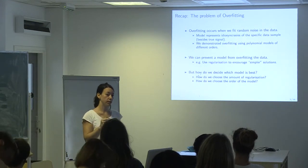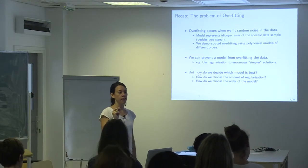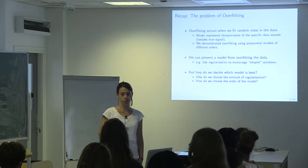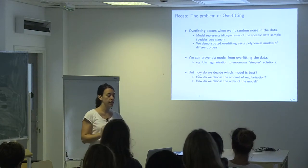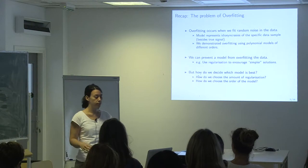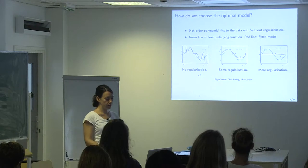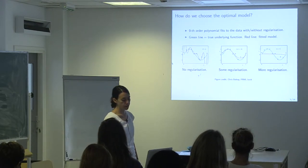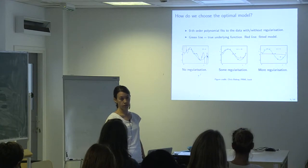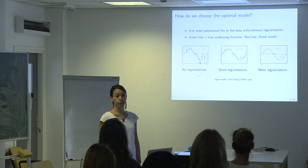In lasso and ridge we had that lambda parameter that weighted how much we penalize complex solutions. Today we're going to see how to choose this, because we need to choose it somehow. Here is another example: the green line is the true underlying function, a sinusoidal function, and the blue dots are data points generated from this function plus some random noise.